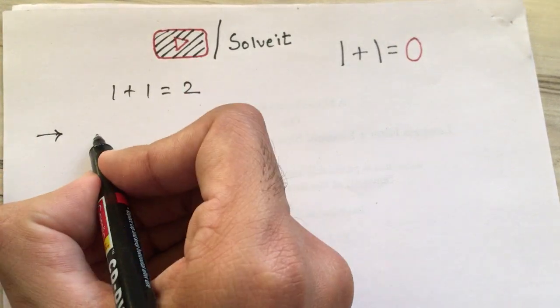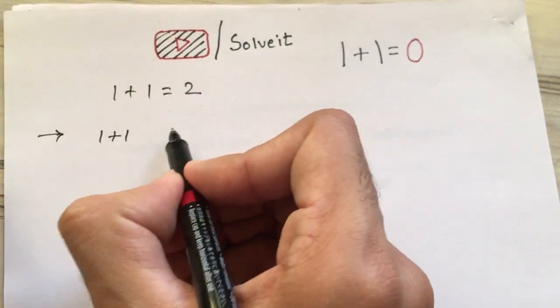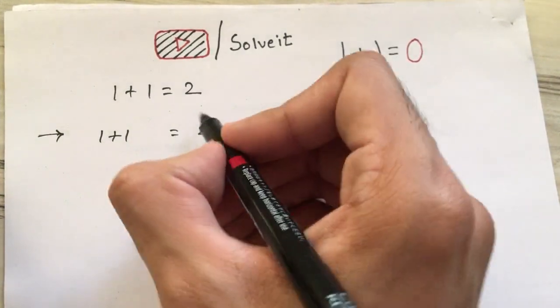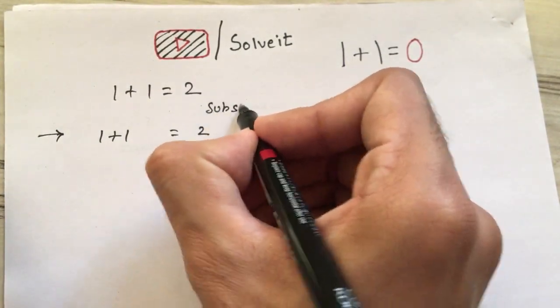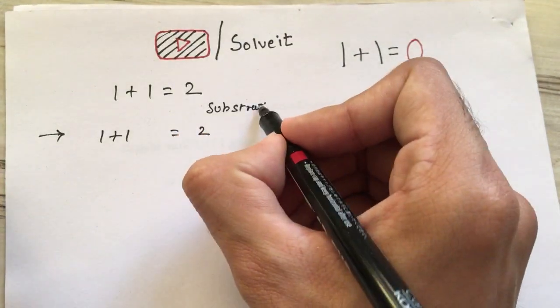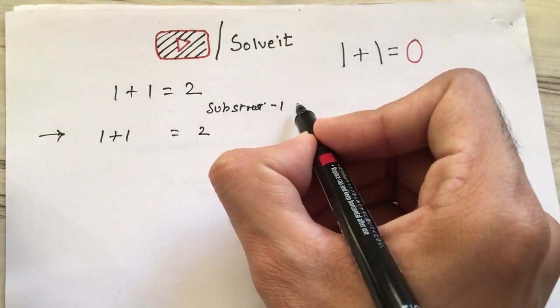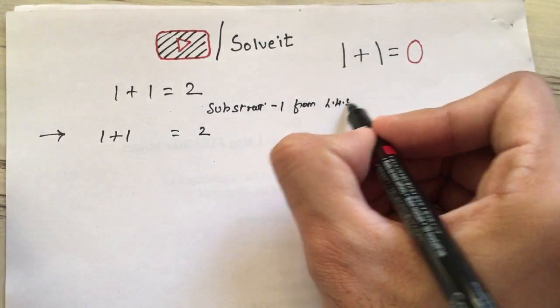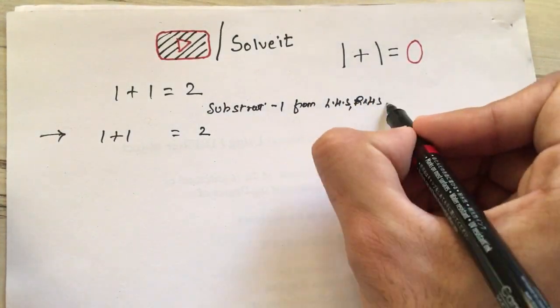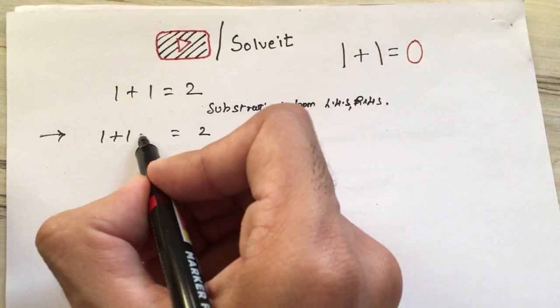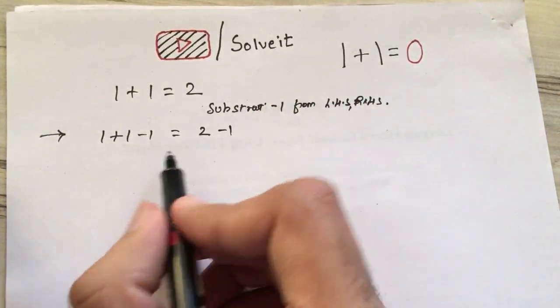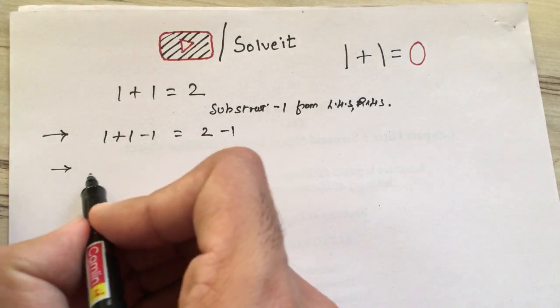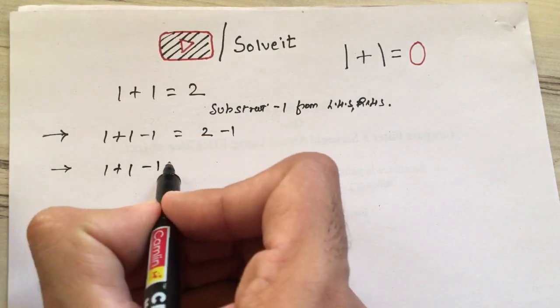Let us take our first step, which would be writing it the same: 1+1 = 2. For our first step, I would like to subtract -1 from LHS (left-hand side) and RHS (right-hand side) from both the sides. So let's subtract -1 from both the sides. The next step would be 1+1-1.